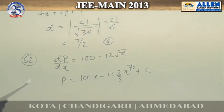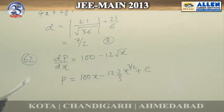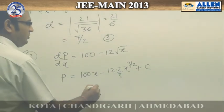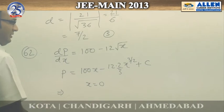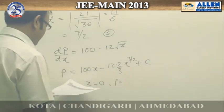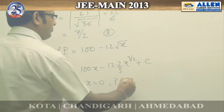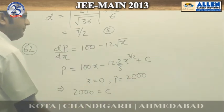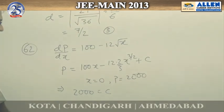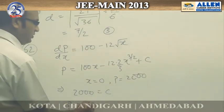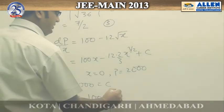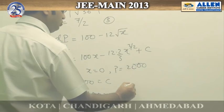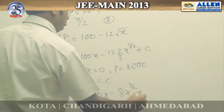Initially, the production is given as 2000 items, and additional workers at this point means x = 0. Putting x = 0 and p = 2000, we get C = 2000. So our equation becomes p = 100x - 8x^(3/2) + 2000.